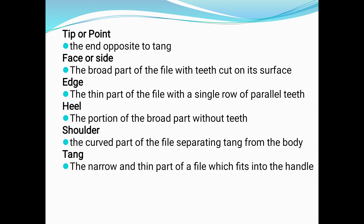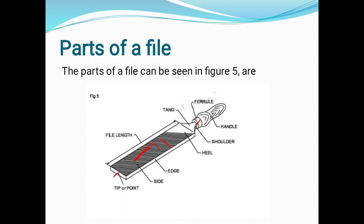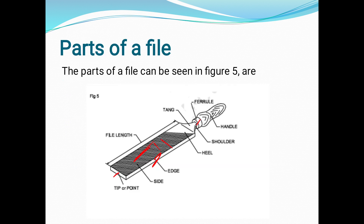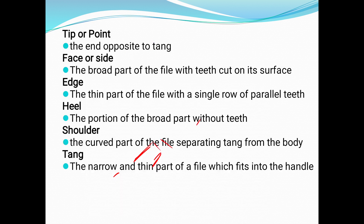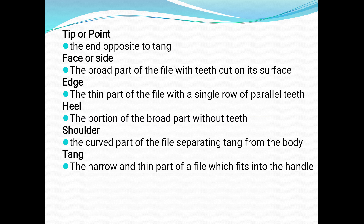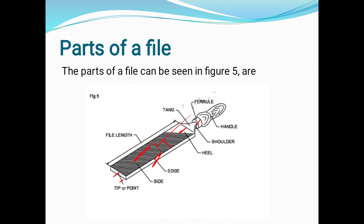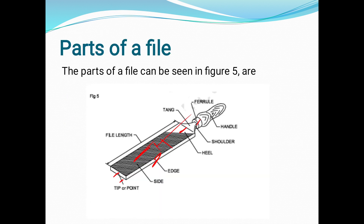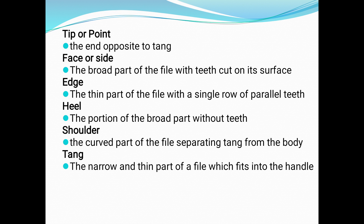The face is on the side. The edge is the thin part of the file with a single row of parallel teeth. The heel is the portion of the broad part without teeth. The shoulder is the curved part of the file, separating the tang from the body.